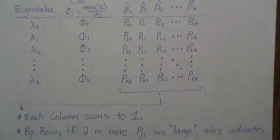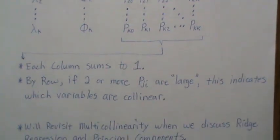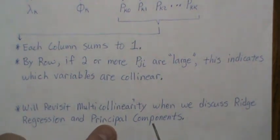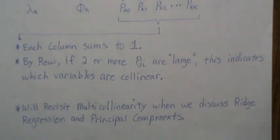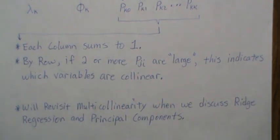That's all I'm going to do for multicollinearity in this series. We'll revisit it when we discuss ridge regression and principal components, which are two common approaches to combat multicollinearity. These methods give a biased estimate of the beta parameters, but are widely used. Hopefully you enjoyed that — please like the video and subscribe so you don't miss the next one.